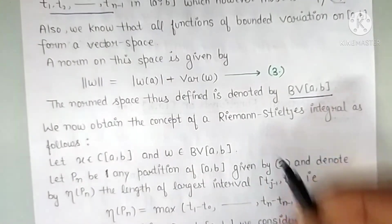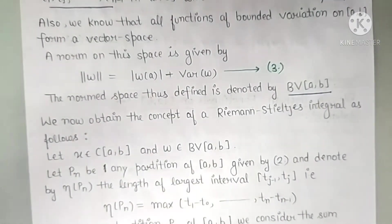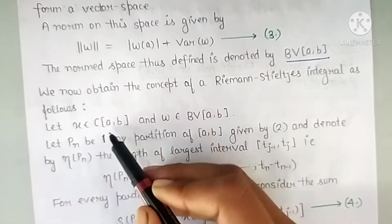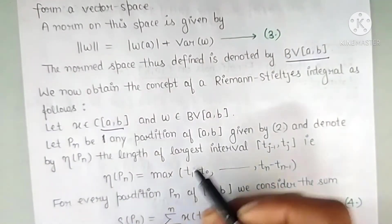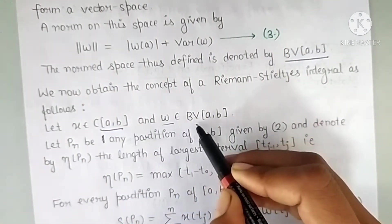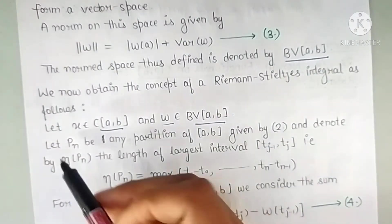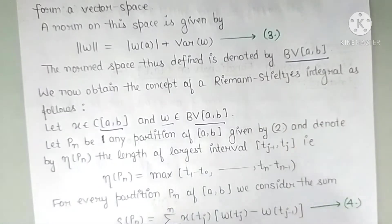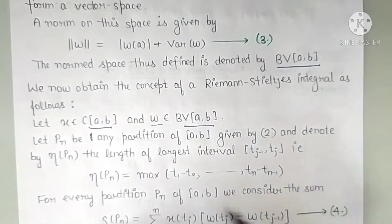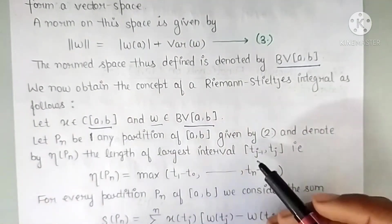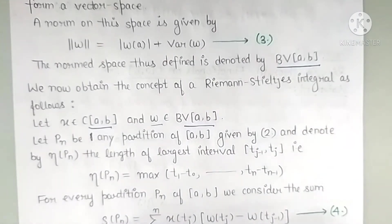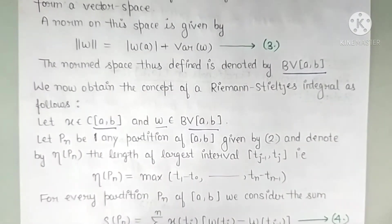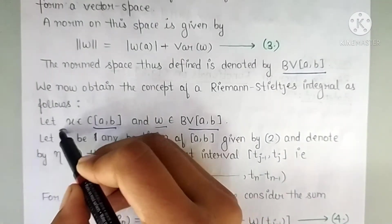Now we look at the application for Riemann-Stieltjes. Take any x in C[a,b], and let w be any function of bounded variation. Let P_n be any partition of [a,b] as defined above — n is an arbitrary natural number.